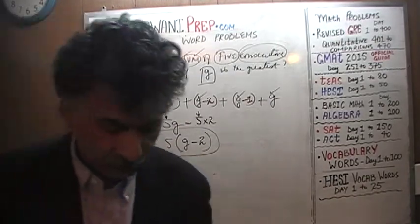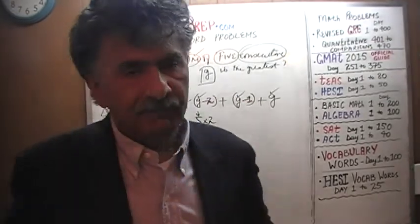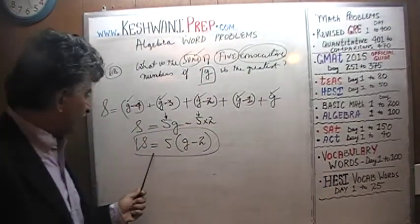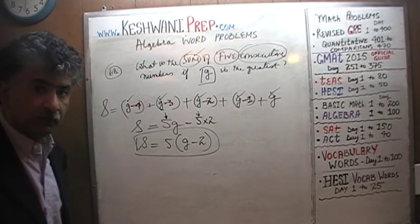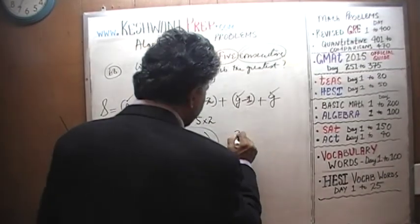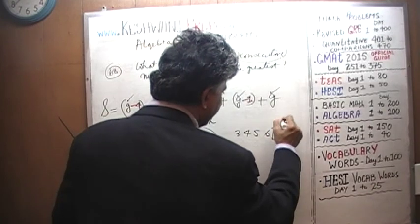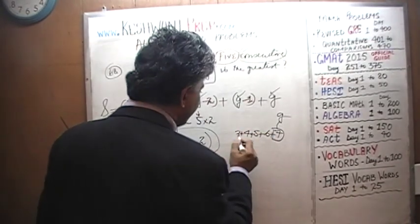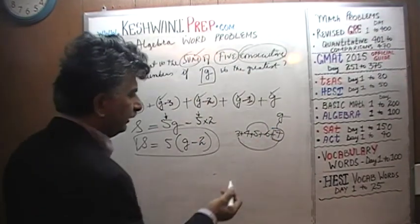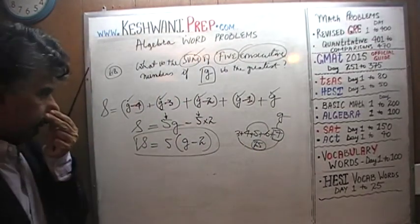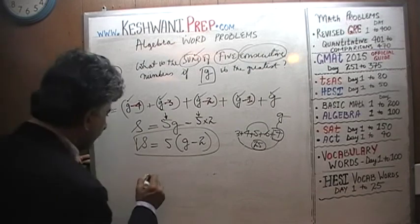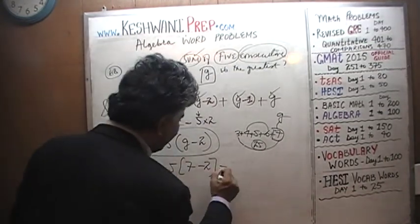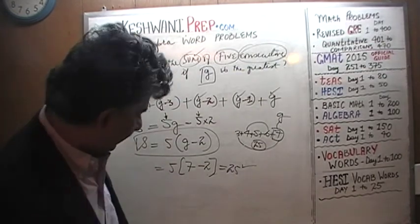The sum of 5 consecutive numbers where G is the greatest is 5 times (G minus 2). Let's verify: take 3, 4, 5, 6, 7 — G is 7. Their sum: 3 plus 7 is 10, 4 plus 6 is 10, plus 5 gives 25. Now check: 5 times (7 minus 2) equals 5 times 5, which is indeed 25. That tells us we have not made a mistake.